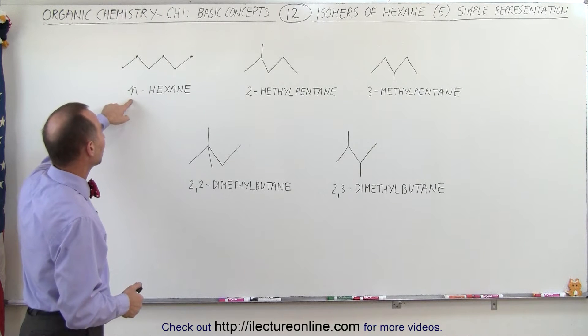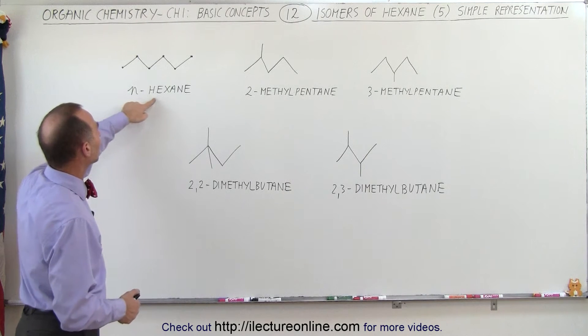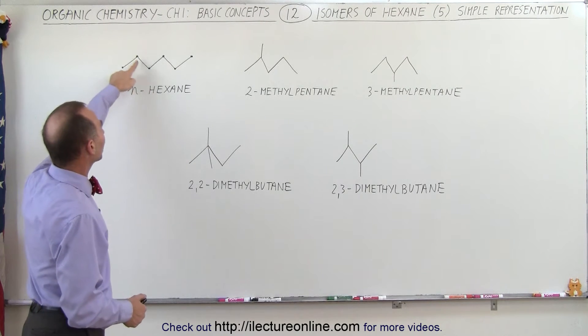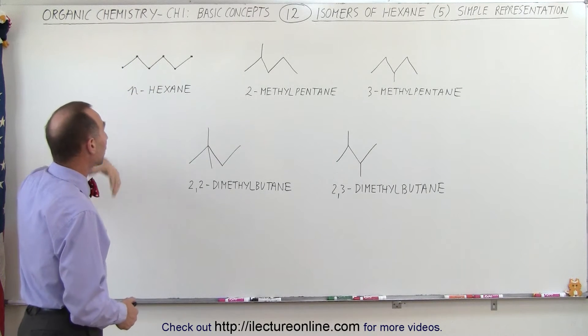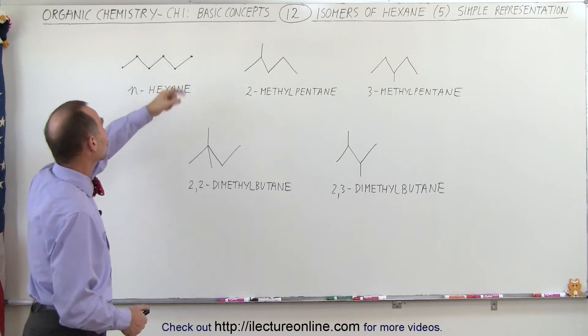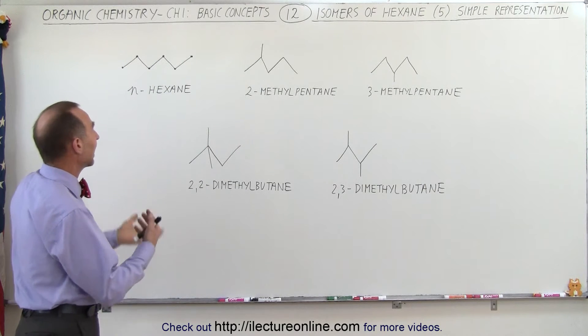Here we have the linear form of hexane called n-hexane. We can add the dots to indicate that each corner does represent a carbon atom, but we don't have to. We can simply go ahead and draw the five lines representing n-hexane.